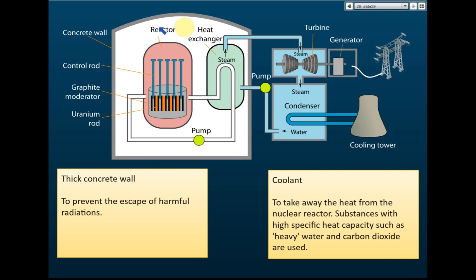We also need a thick concrete wall around the reactor. After the reactions, radioactive substances are produced, and these emit harmful radiation. The thick concrete wall blocks these radiations - it is several meters thick, unlike a house wall which is just a few centimeters. The coolant water is used to cool down the steam, absorb the energy from the steam, and send it to the cooling tower.